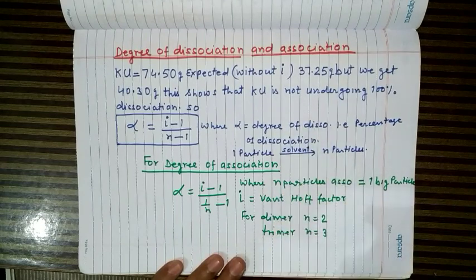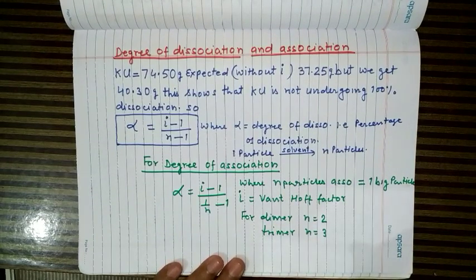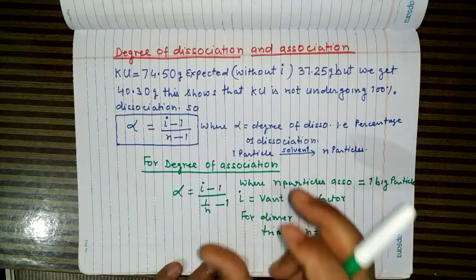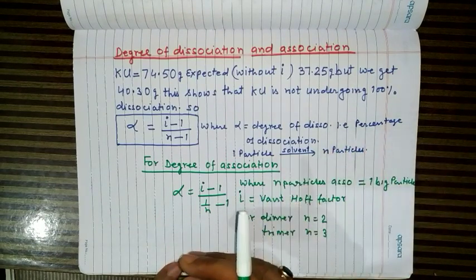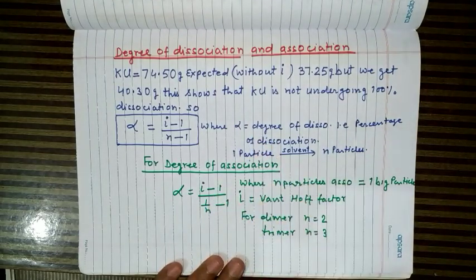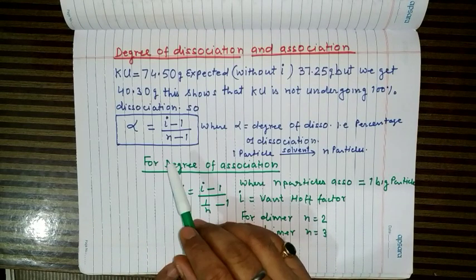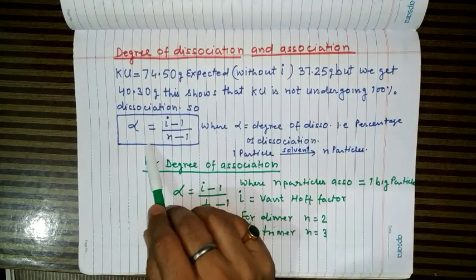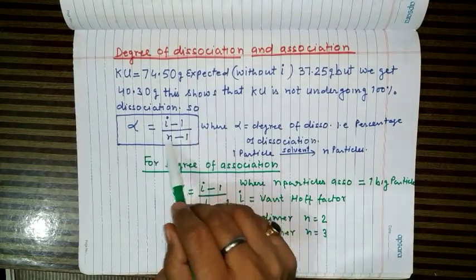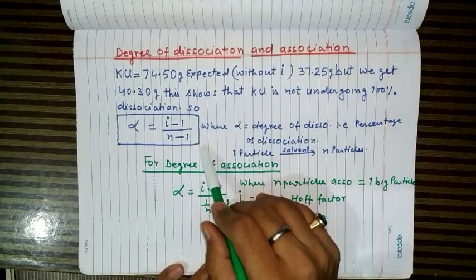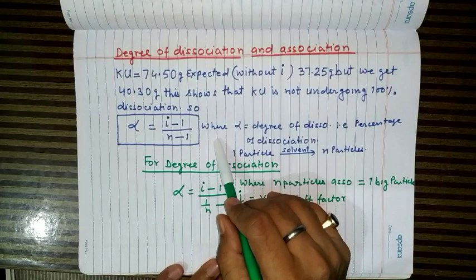In such cases, we need the degree of dissociation — that is, how many particles out of the total number of electrolyte particles are actually dissociating in the given solvent. If one particle dissociates into n particles, the degree of dissociation α = (i − 1) / (n − 1). This formula is not in NCERT but is required for solving problems, so you should memorize it.